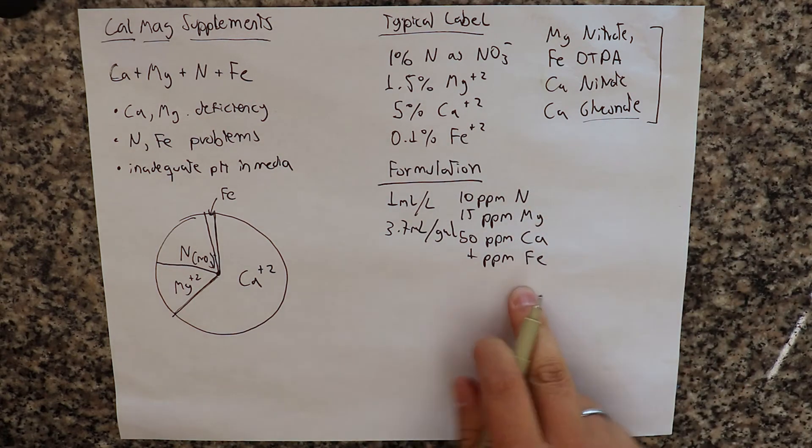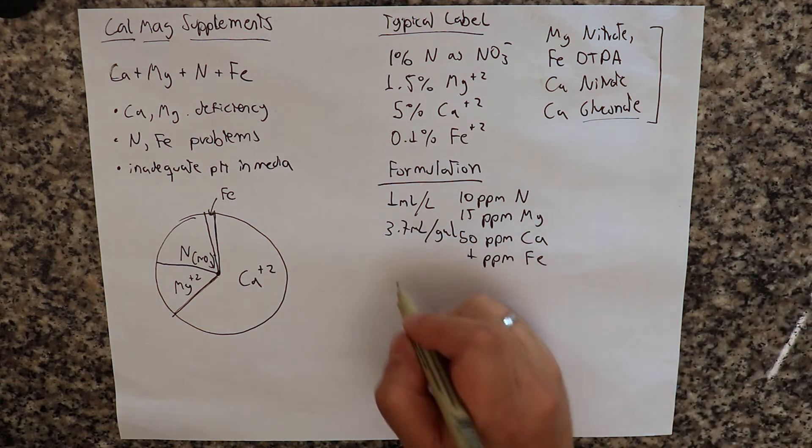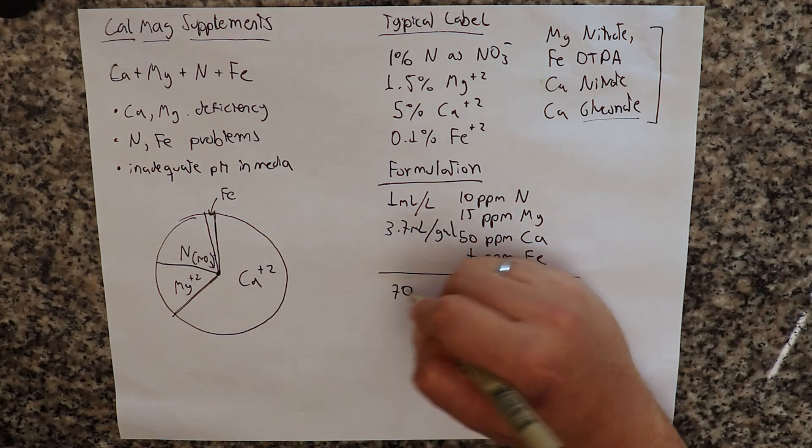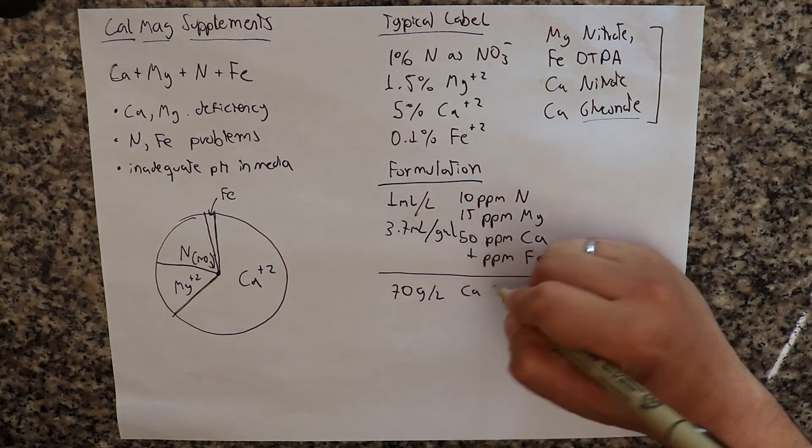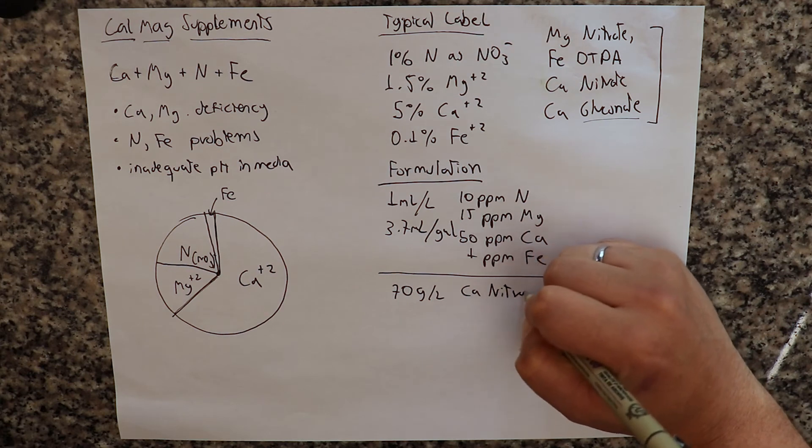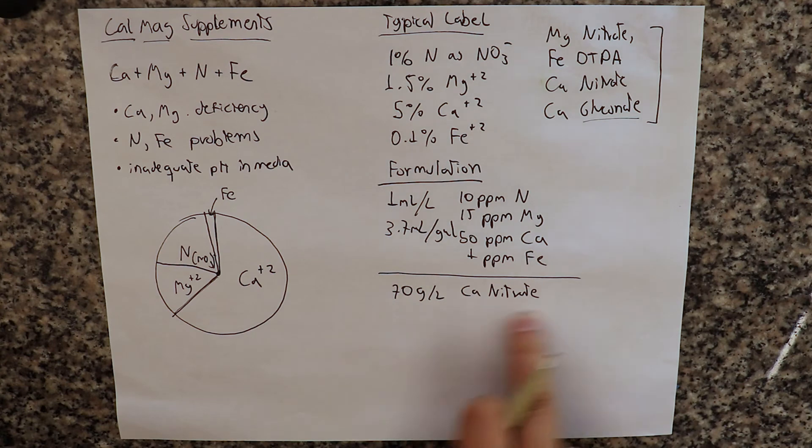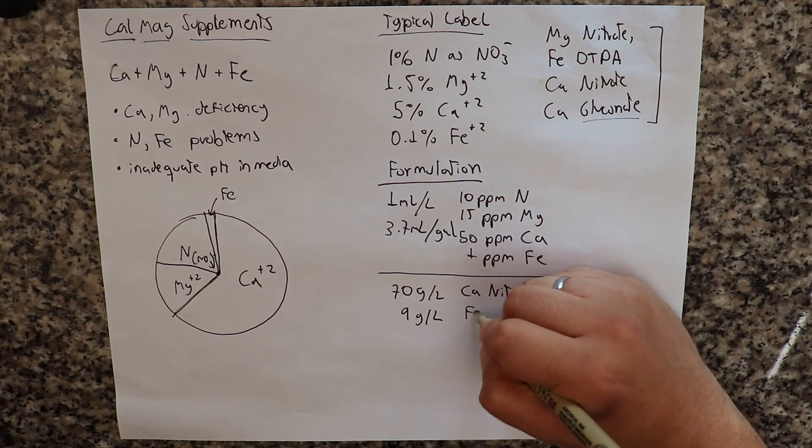So how can we make something that has a similar composition or exactly this composition? So what I would do is I would use 70 grams per liter of calcium nitrate. This is like your Yara, greenhouse-grade, fertigation-grade calcium nitrate. Then you would have 9 grams per liter of iron DTPA.